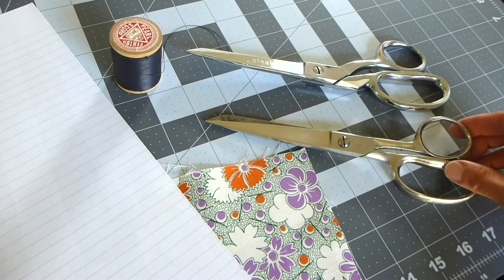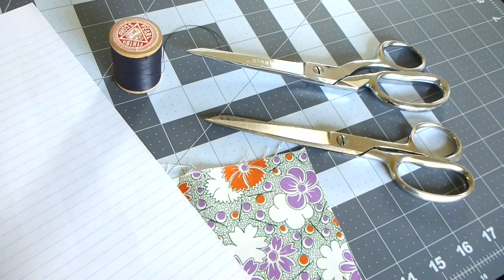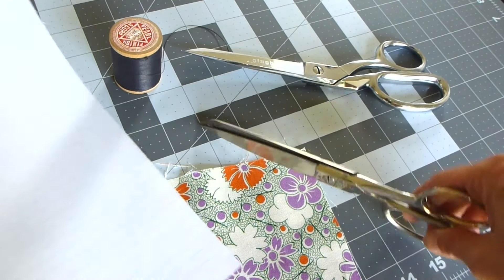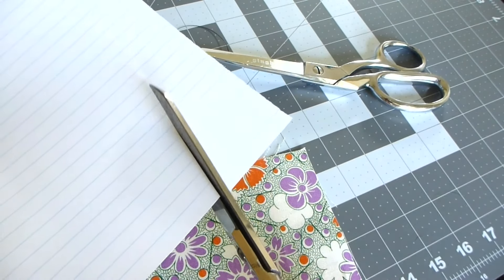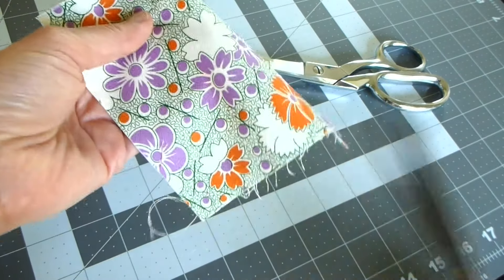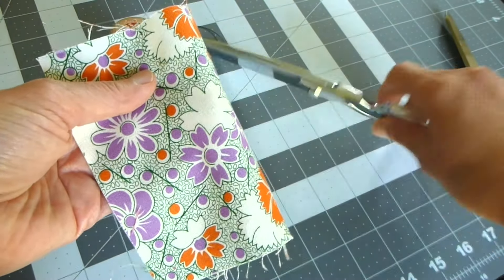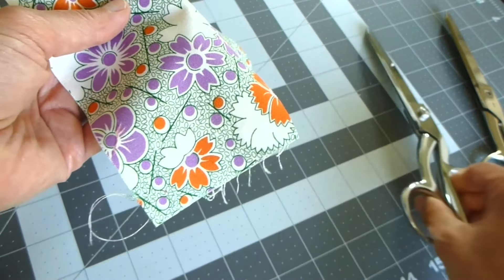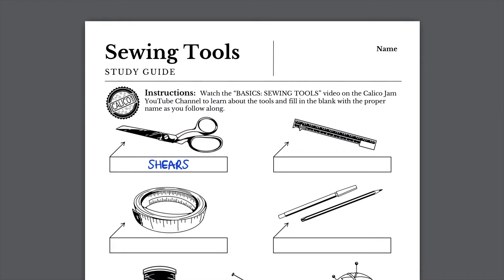To keep your shears in good working condition, only use them for cutting fabric and thread. Never cut paper or other materials with your shears. You can see that my household scissors cut paper very well, but do not cut fabric, while the shears will easily cut the fabric. Label the shears on your study guide.